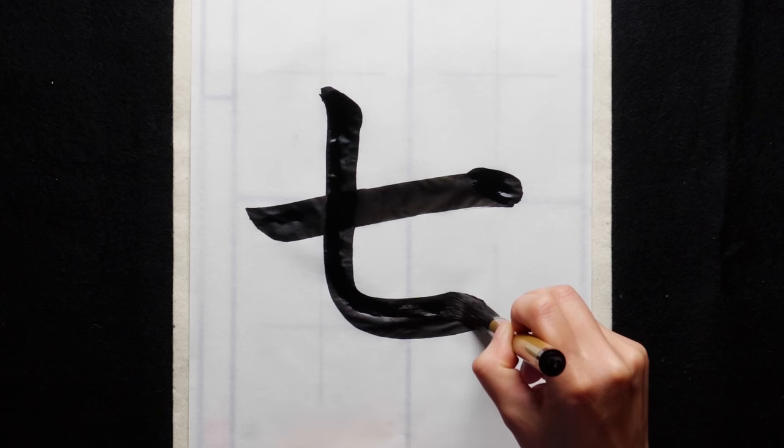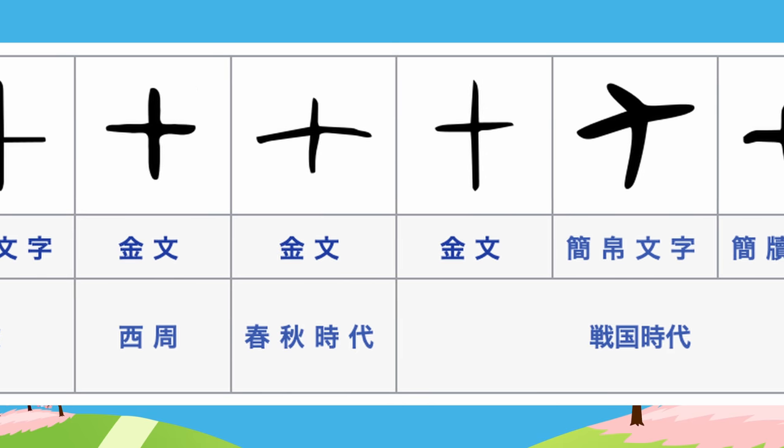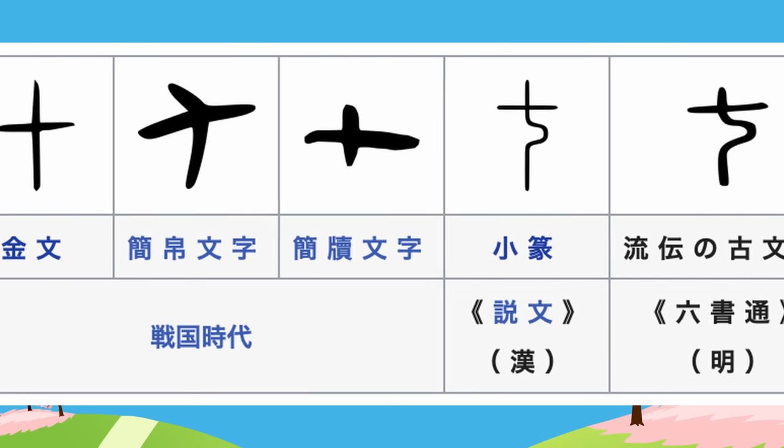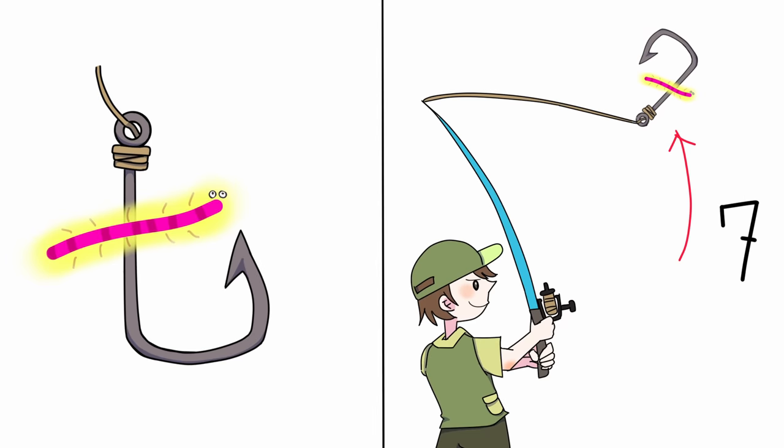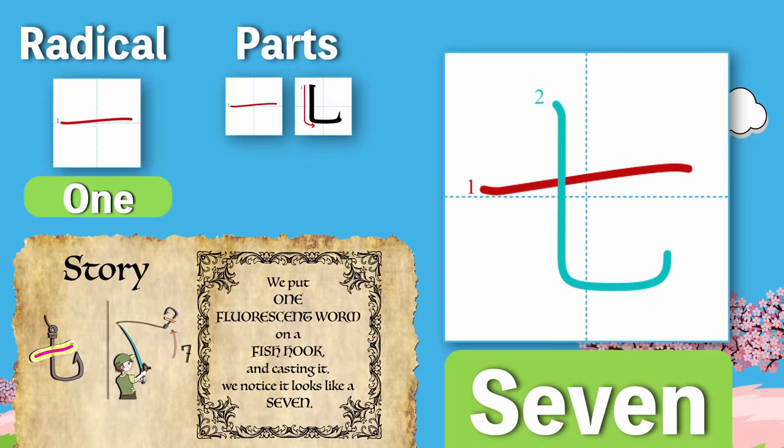Because as you may remember, lines that go vertically through other parts are usually drawn last. 7 has an interesting historical evolution in that it used to look a lot like the kanji for 10 looks now. And in more recent times, relatively that is, it was kind of like a groovy cross or a weird dagger. None of that will help you as much as this image, though. We put 1 fluorescent worm on a fish hook and casting it, we noticed it looks like a 7. Do you see the 7? It sure looks like one to me. Especially if you've ever seen fonts where there's a line through the 7. On a side note, if you're finding this video helpful, make sure you hit the like button. It really helps. I think.